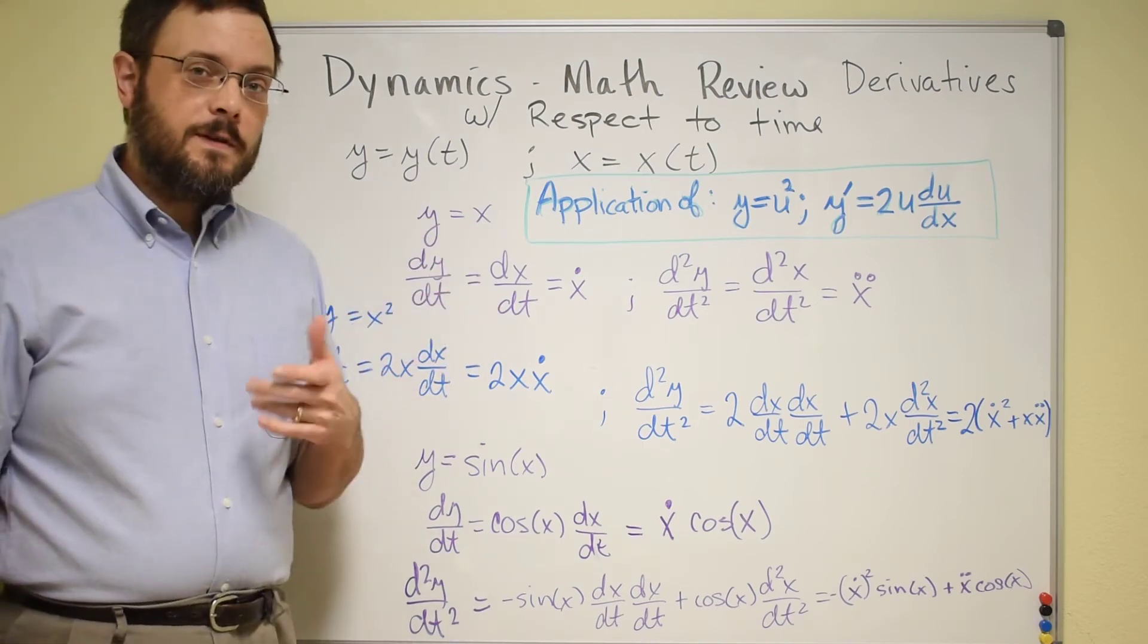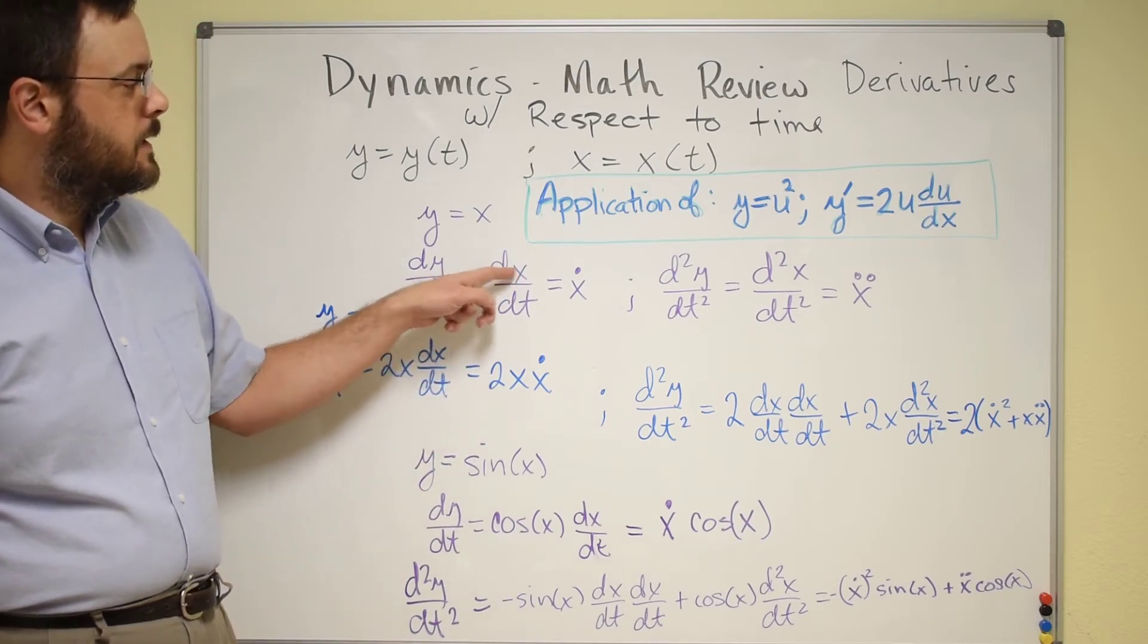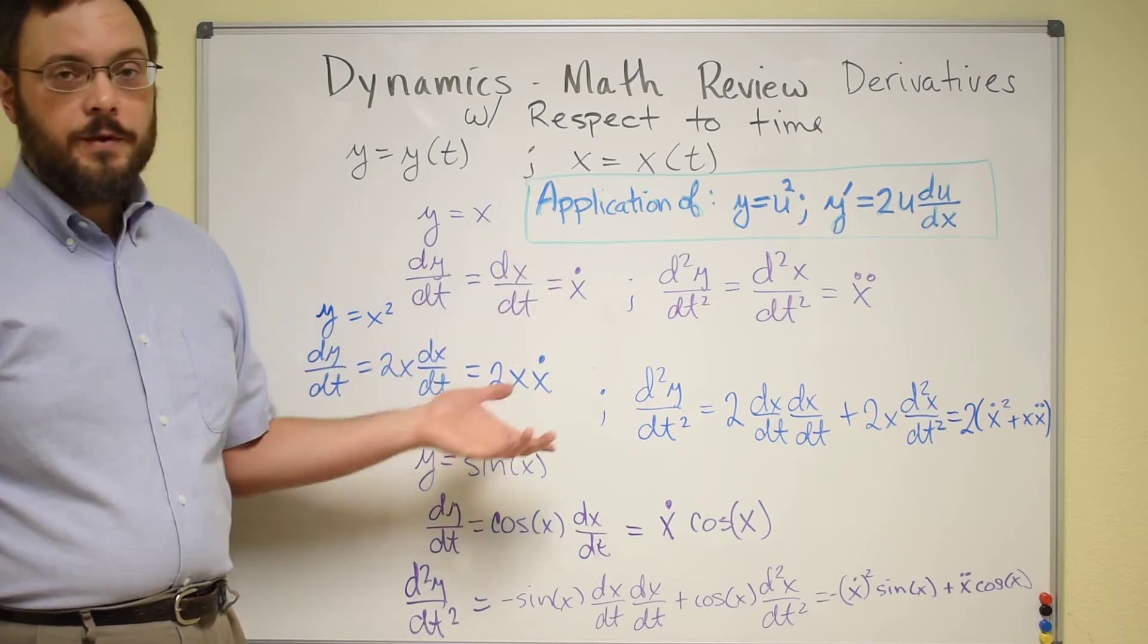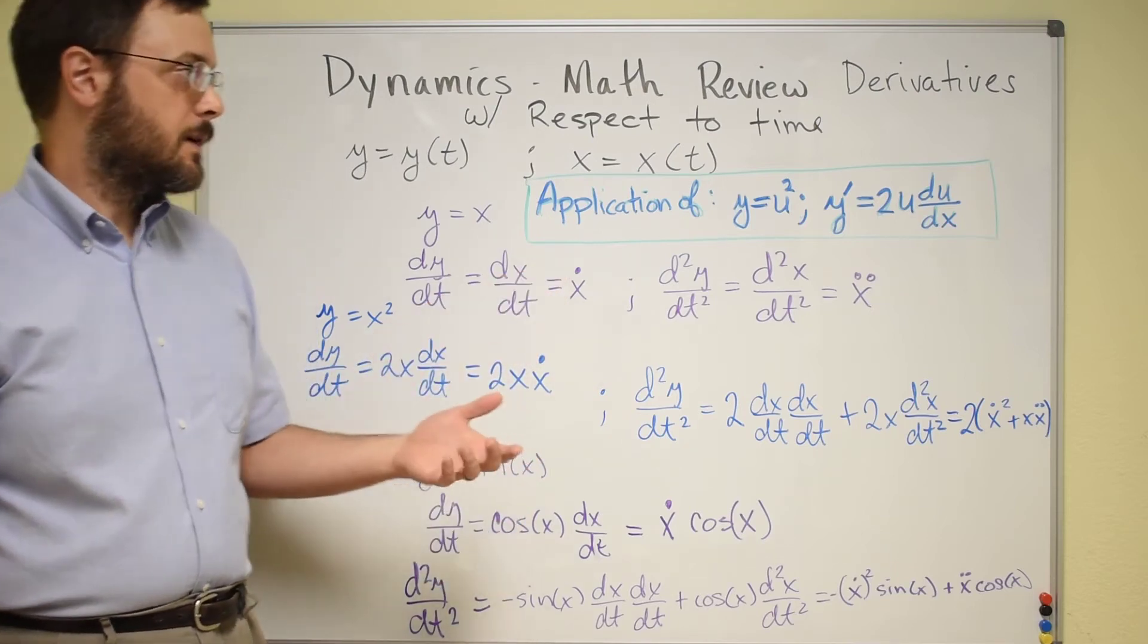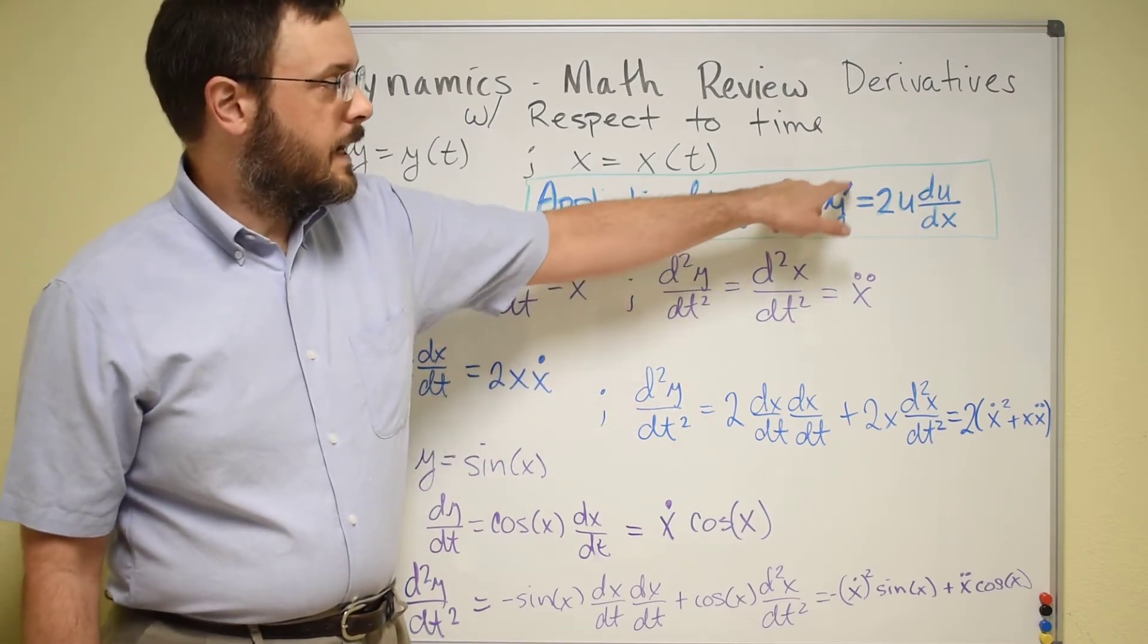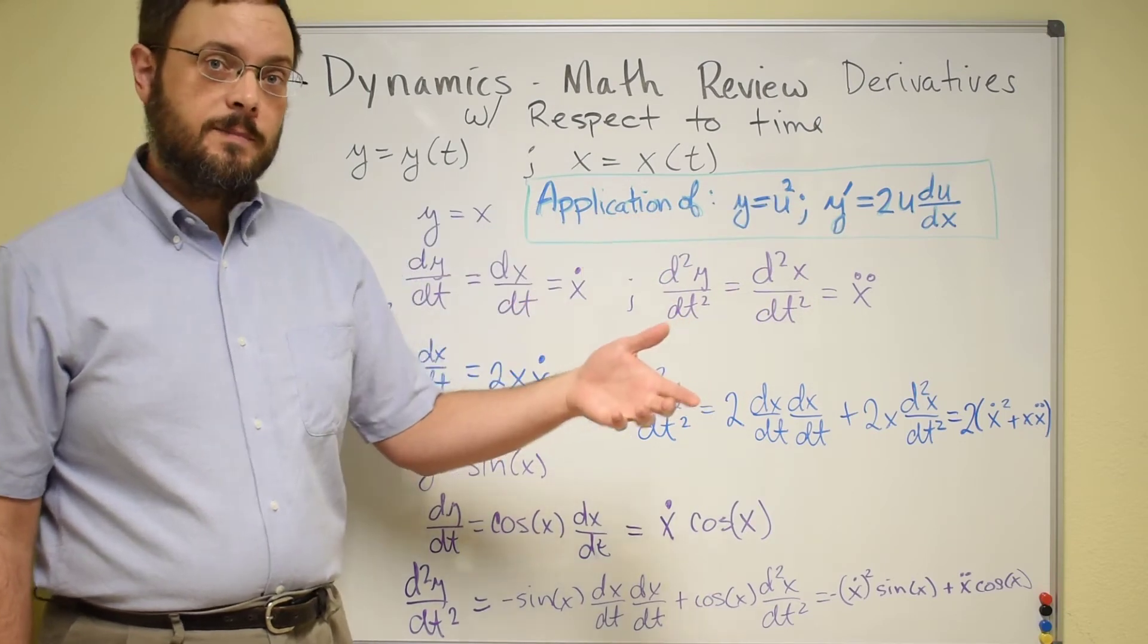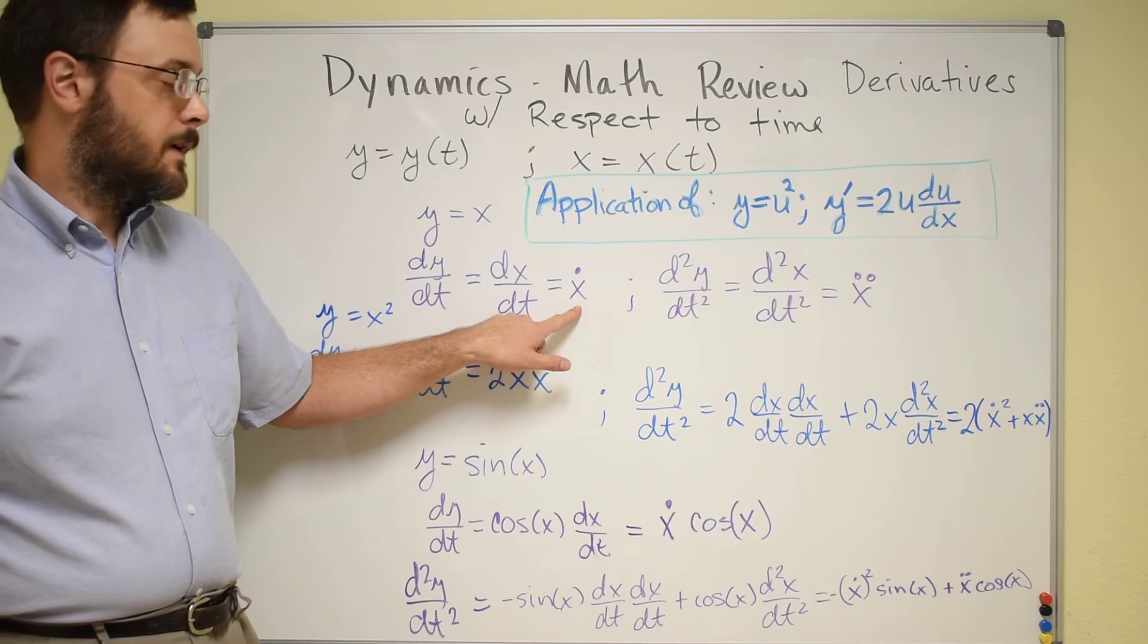And for some reason oftentimes engineers, instead of writing dx/dt, we just put the variable and put a single dot over it to indicate that it's the first derivative with respect to time. Just like the dash that you used in calculus always meant a derivative with respect to x, the dot always means a derivative with respect to time.